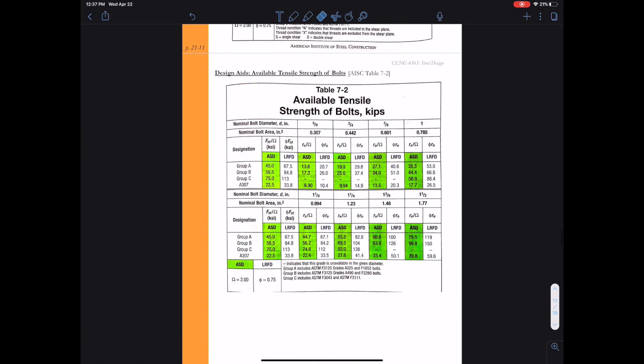In addition, there's table 7-2 for the available tensile strength of bolts. I would go ahead and just know that this is in there. You don't necessarily have to use the equations in chapter J to calculate these values. You have this design aid at your disposal.